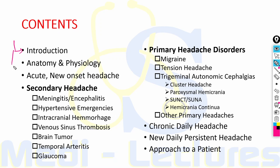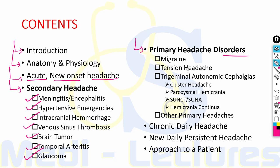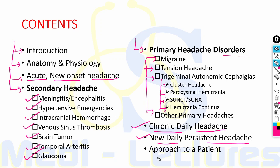In this lecture we will first deal with the introduction, then anatomy and physiology of headache, clinical evaluation of acute new onset headache, types of headache divided into secondary and primary headache. In secondary headache we will discuss meningitis, encephalitis, hypertensive emergencies, intracranial hemorrhage, venous sinus thrombosis, brain tumor, temporal arteritis and glaucoma. In primary headache disorders: migraine, tension headache, and trigeminal autonomic cephalgias including cluster headache, paroxysmal hemicrania, SUNCT, SUNA, hemicrania continua, and other primary headaches.